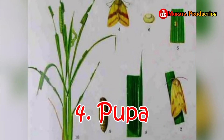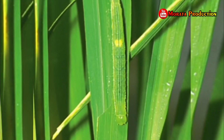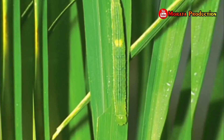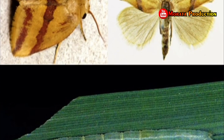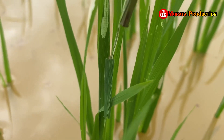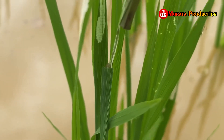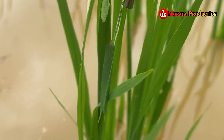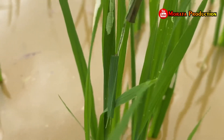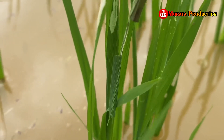Fourth and last: the pupa. The pupa is light yellow and turns brown before the adult moth emerges. The pupa is wrapped in a silken cocoon, yellow in color, and located inside the rolled rice leaf folded by the larva. The pupal period lasts 4 to 8 days, after which the pupa becomes an adult imago ready to reproduce again.